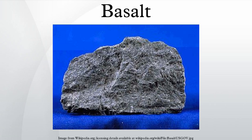Basalt which erupts under open air forms three distinct types of lava or volcanic deposits: scoria, ash or cinder, and lava flows. Basalt in the tops of subaerial lava flows and cinder cones will often be highly vesiculated, imparting a lightweight frothy texture to the rock. Basaltic cinders are often red, colored by oxidized iron from weathered iron-rich minerals such as pyroxene.